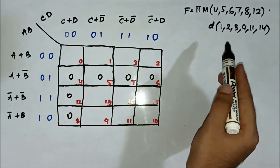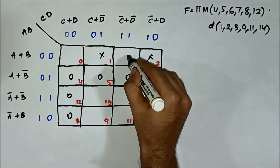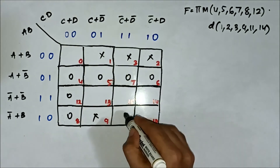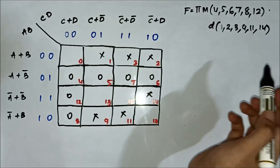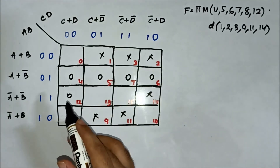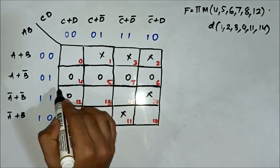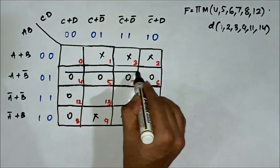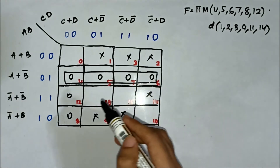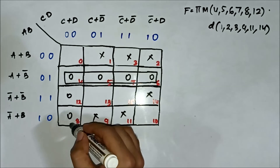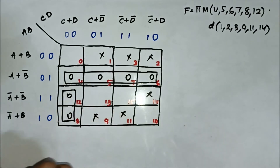The don't care values are 1, 2, 3, 9, 11, and 14. Now we form the groups. The four 0-mark cells 4, 5, 6, and 7 will form a quad.